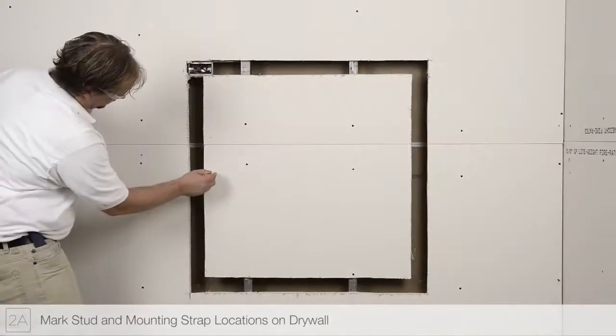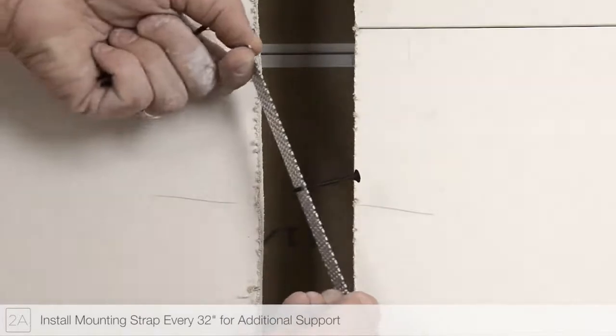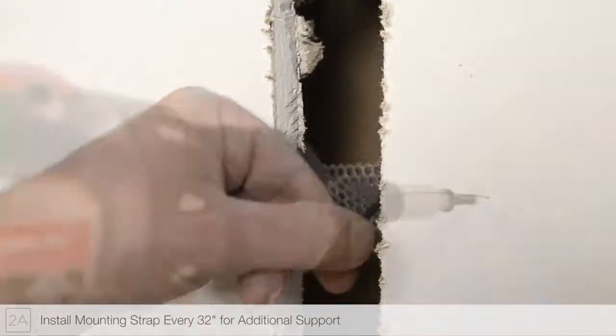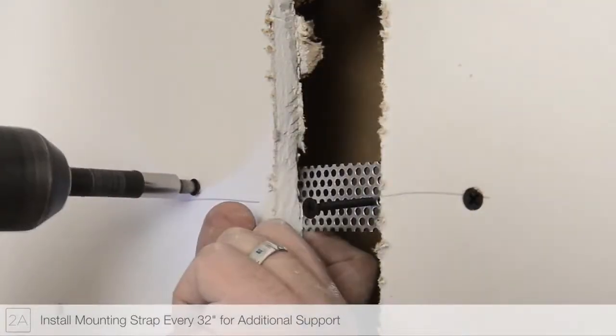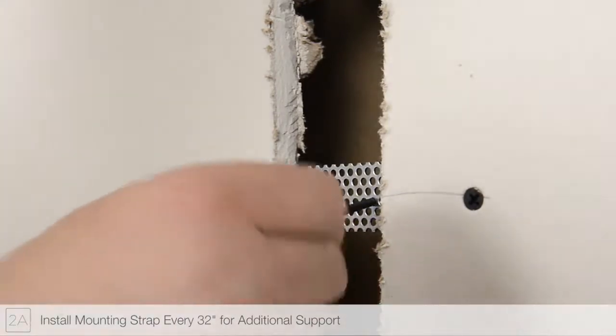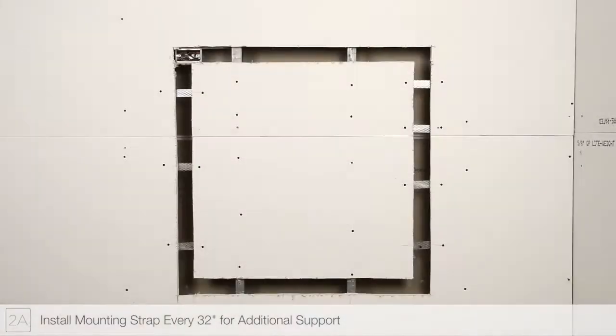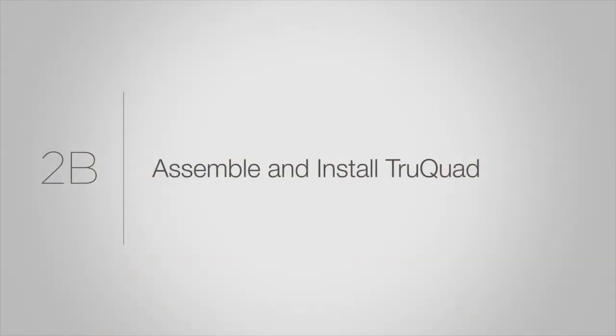Mark the stud and mounting strap locations. Install mounting straps every 32 inches along the installation area for additional support, where there is no stud or joist to support the channel. Step 2B.